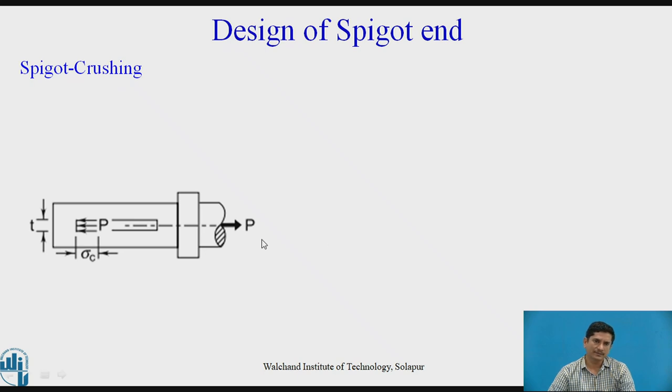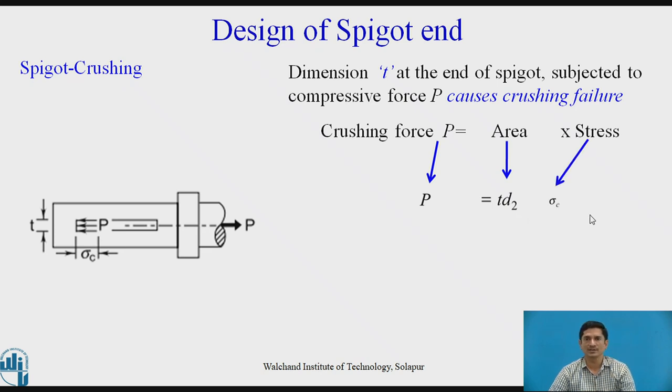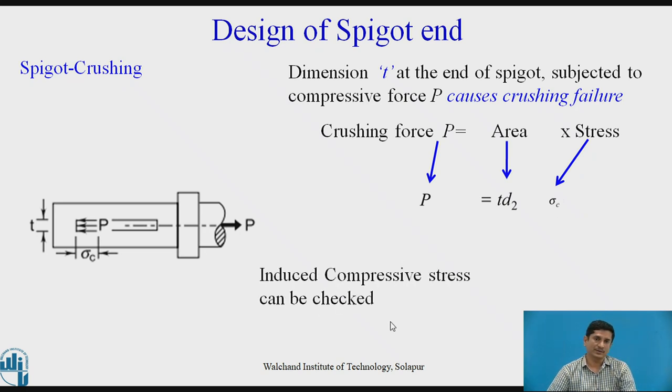Spigot under crushing. There is a compressive force at this zone of width T. Because cotter is continuously having compressive force on that zone, I need to establish the crushing force equation. Crushing force P equals the area resisting the crushing failure which is T into D2 multiplied by the corresponding crushing stress. Induced compressive stress can be checked from this equation.